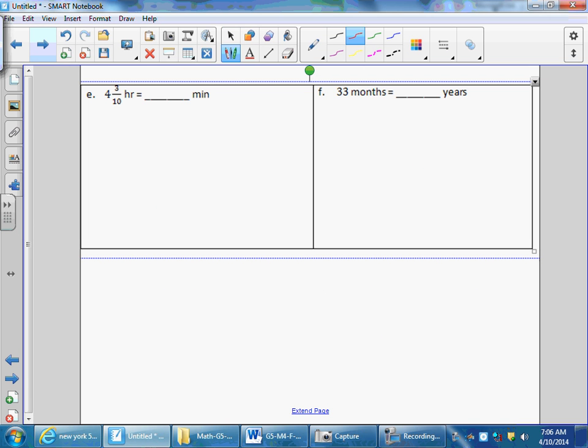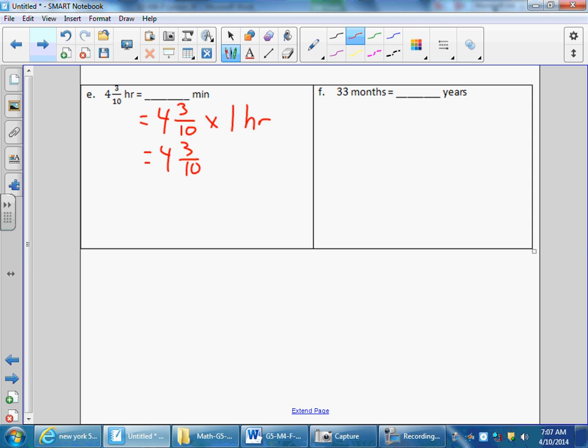E. Four and three-tenths hours equals how many minutes? First step is important. Four and three-tenths times one hour. I then take the four and three-tenths and convert it to minutes. How many minutes are in an hour? Is it one-sixtieth or sixty minutes in one hour? Sixty minutes equals one hour.